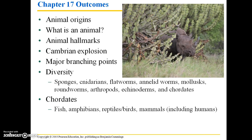The outcomes for this chapter are as follows. We'll discuss animal origins, define what an animal is, provide some animal hallmarks, talk about the Cambrian explosion, major branching points, and diversity which will cover many different phyla of invertebrates as well as the chordates — including fish, amphibians, reptiles and birds, as well as mammals, including humans.